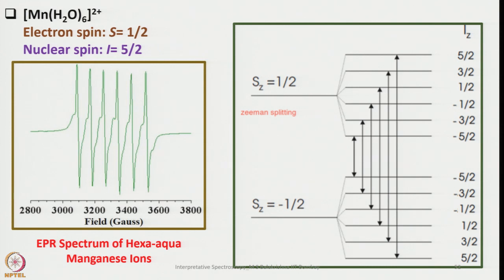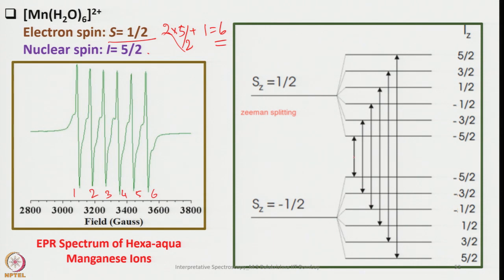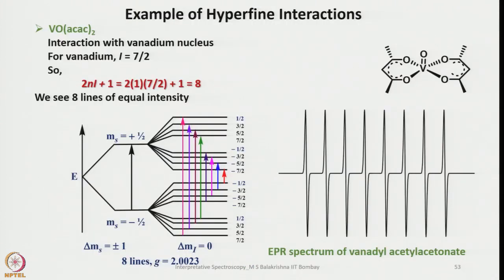Now let us look at hexa-aqua manganese(II), [Mn(H2O)6]2+. Here the electron spin is S = 1/2 and the nuclear spin of 55Mn is i = 5/2. Since i = 5/2, the nuclear spin splits into 6 lines. The EPR spectrum of hexa-aqua Mn(II) therefore shows a sextet, and the coupling or splitting tree — very similar to that shown in NMR — reveals 6 possible transitions.